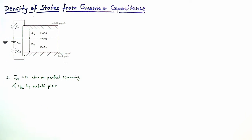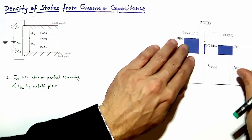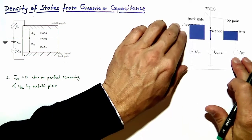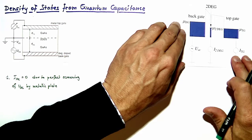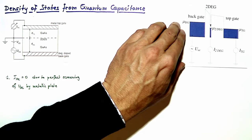The hope is that the screening properties of the 2DEG depend on the density of states at the Fermi energy, so depending on the size of this density of states, more or less electric field lines would penetrate the 2DEG and arrive at the topgate, giving a more or less measurable AC current at the topgate. To understand how this works, I have prepared an energy sketch showing a vertical cross section through the structure.